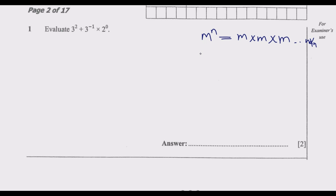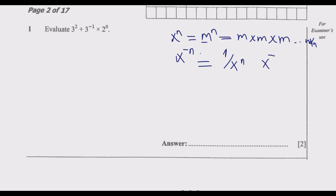If you have x to the power negative n, this means it equals 1 divided by x to the power n. For example, x to the power negative 2 is the same as 1 over x squared. Then anything to the power 0 is equal to 1 — for instance, 100 to the power 0 equals 1. Those are the key principles you need to know.